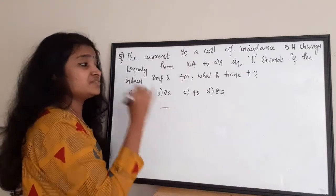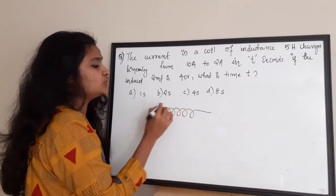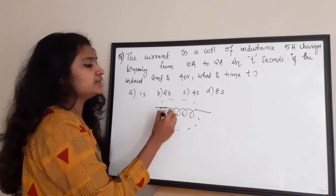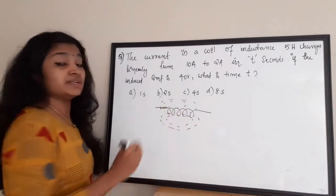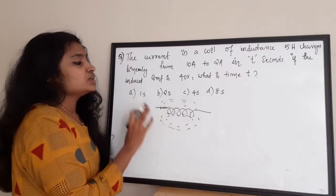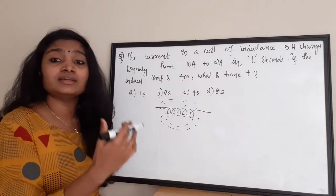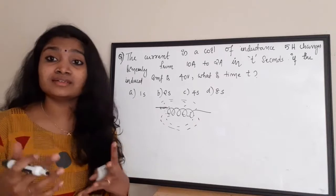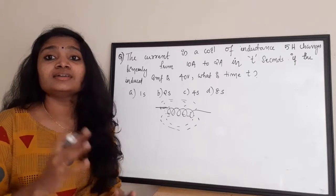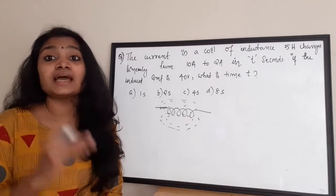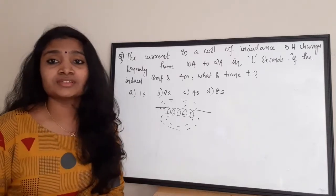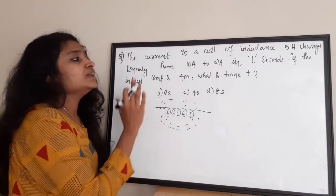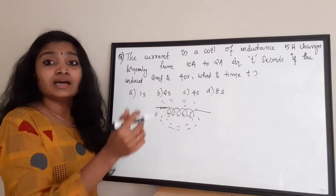Before answering this question, let us see the basics of an inductor. In an inductor, due to the time-varying current, there is a time-varying magnetic field generated in the inductor. When this time-varying magnetic field is increasing or generated in the inductor coil, it will try to oppose the change. So when the current is time-varying, this inductor will actually try to oppose the time-varying nature of this current.